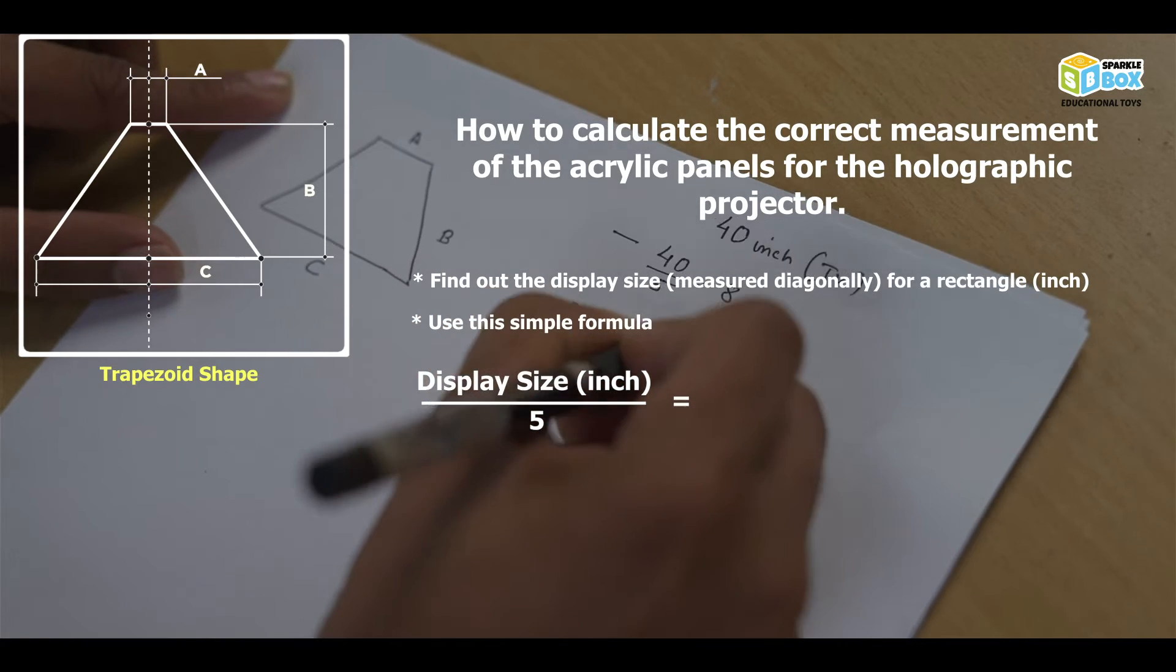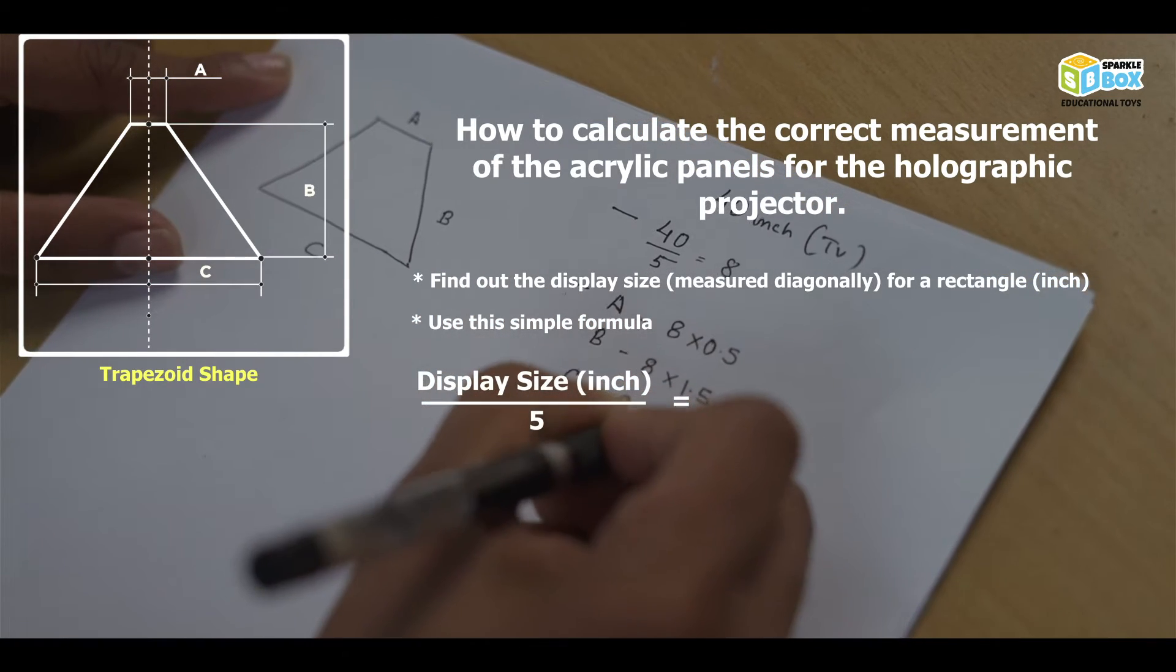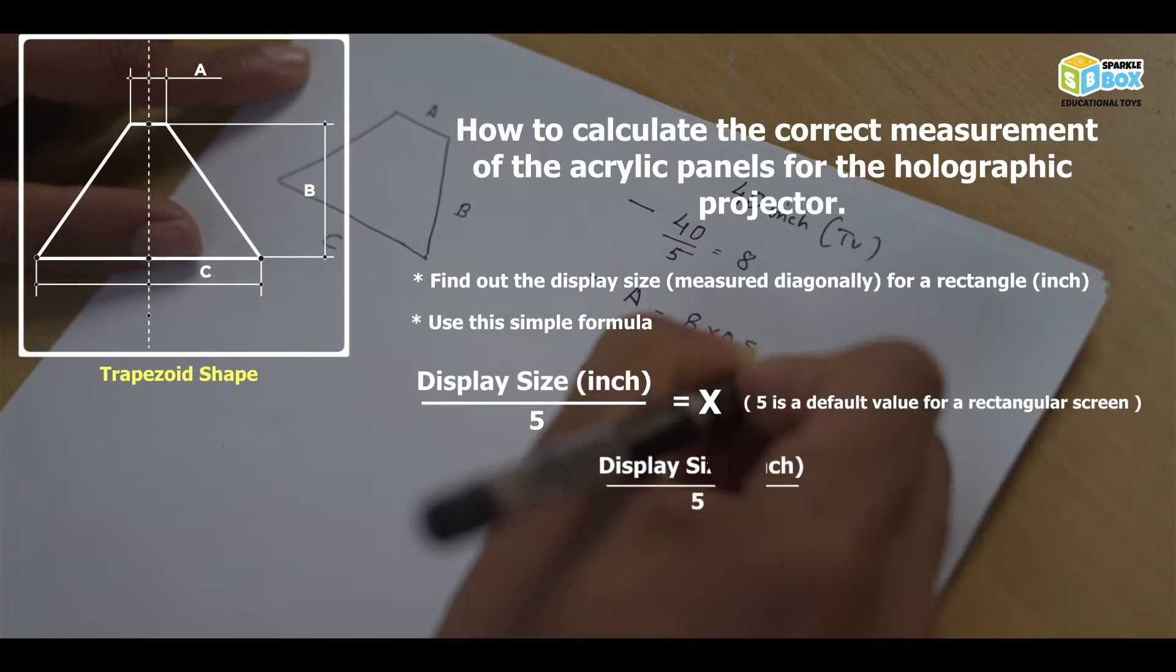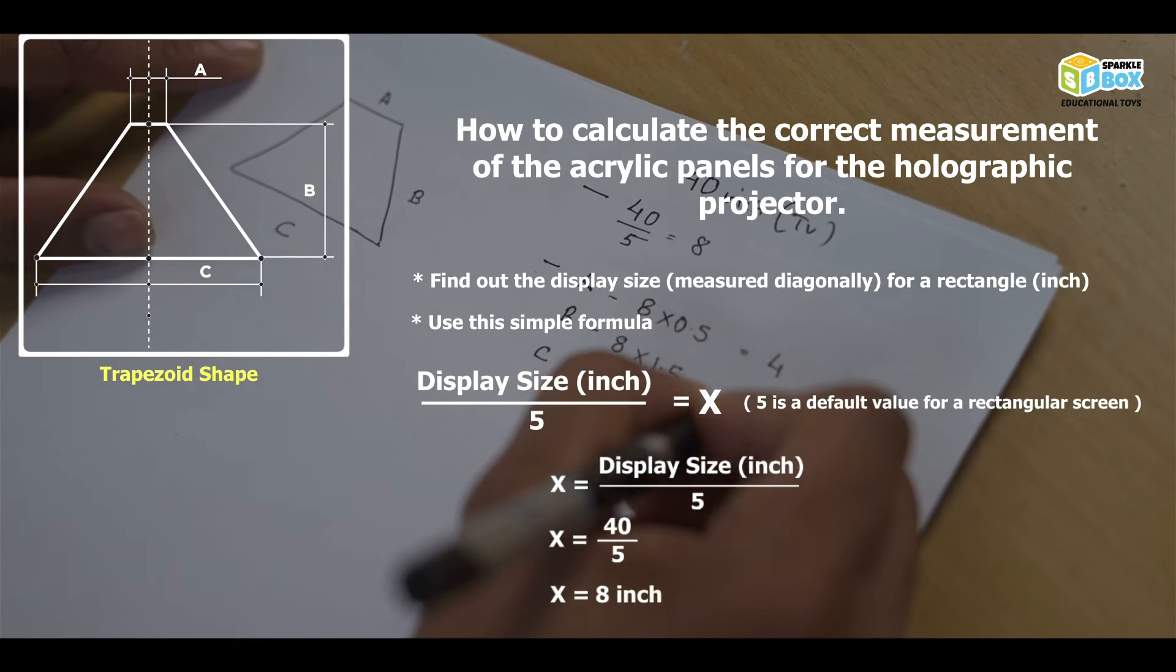Step 1, divide the size of the screen by 5 and let's call this value x. Thus the value of x here is 40 by 5 that is 8 inches.